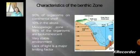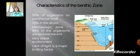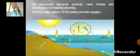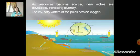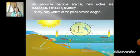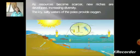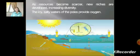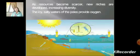Lack of light reduces food availability, predation, and mating opportunities. As resources become scarce, new niches are developed, increasing diversity. The icy, salty waters of the poles provide oxygen. Biomass declines with depth, and the lack of food is directly related to this low population density.